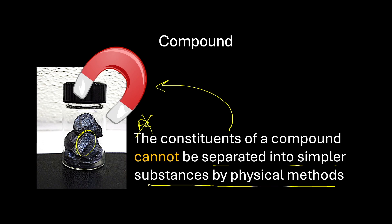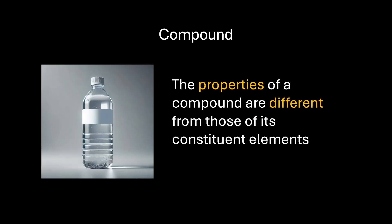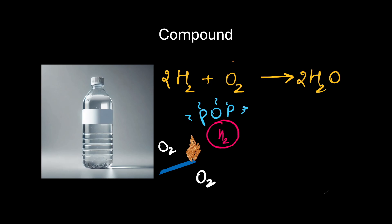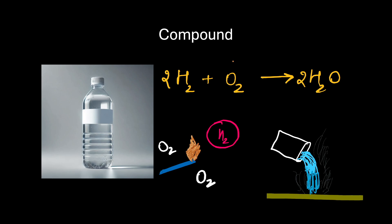If iron sulphide has no other impurities — only FeS — then what we have is a pure substance. So yes, compounds can be pure substances. Another example of a pure substance we discussed was water, which has H2O. Can that be called a compound? The answer lies in the properties of water, which are of course different from those of its constituent elements. Water is made up of hydrogen and oxygen combining in a fixed ratio of 2:1. Hydrogen burns with a pop sound, oxygen supports fire — but water extinguishes fire. So water is of course a compound.